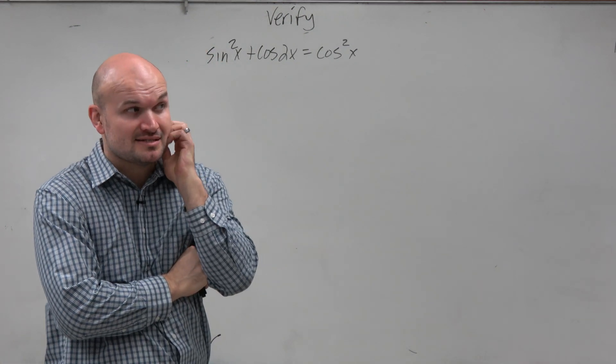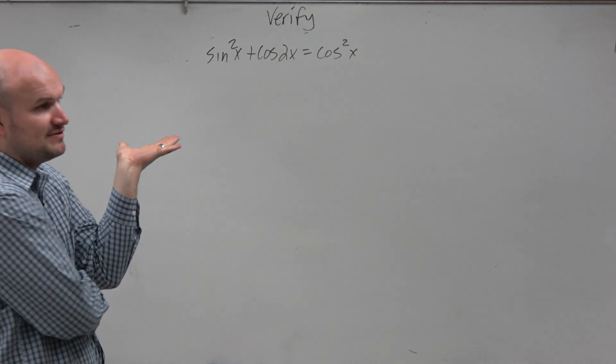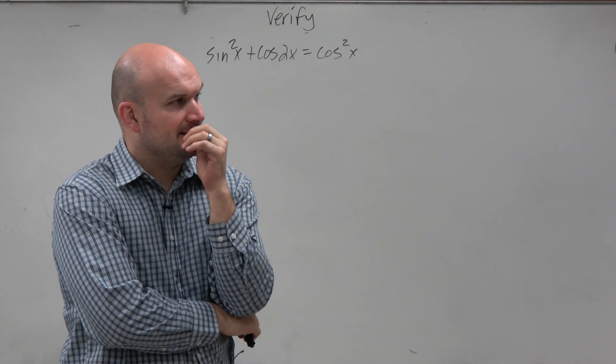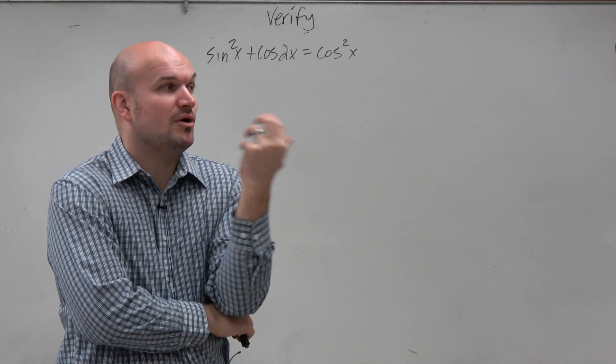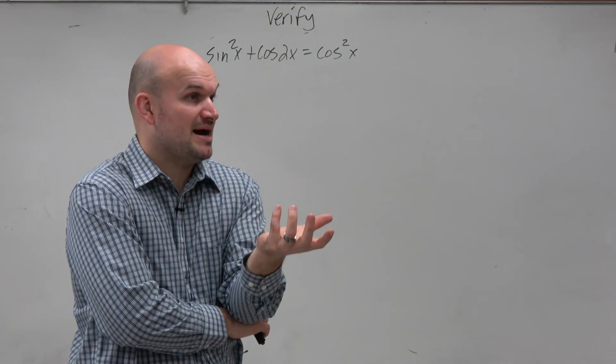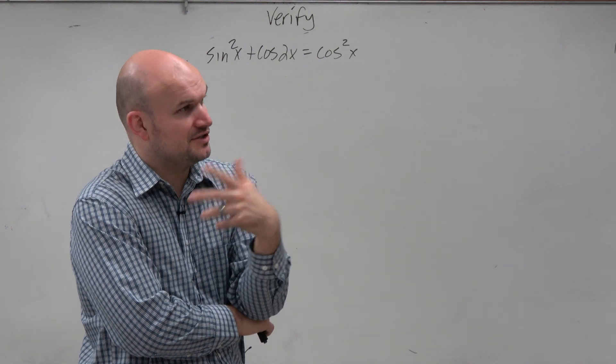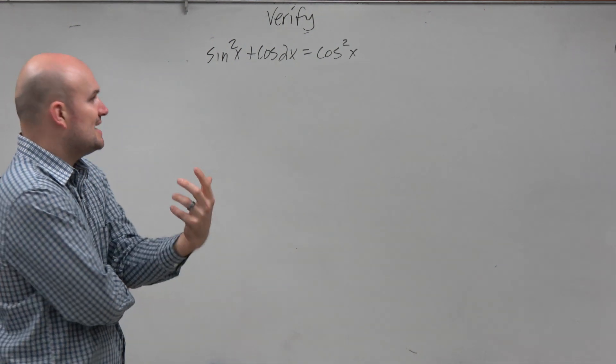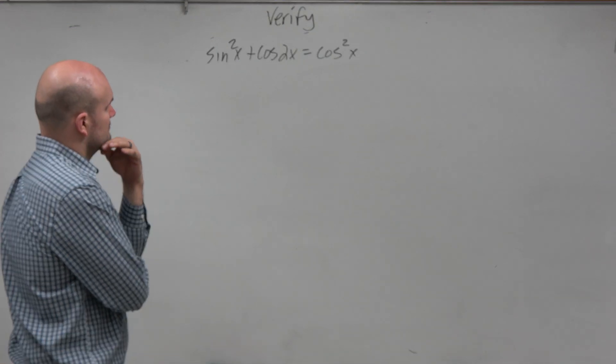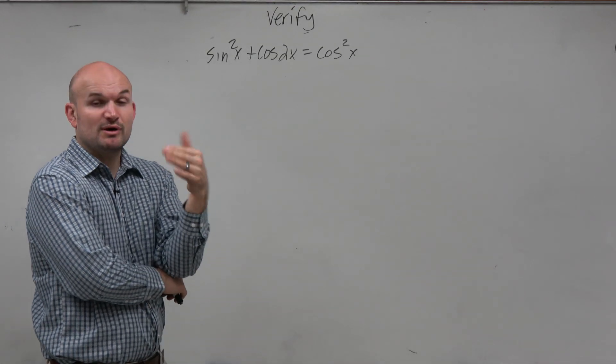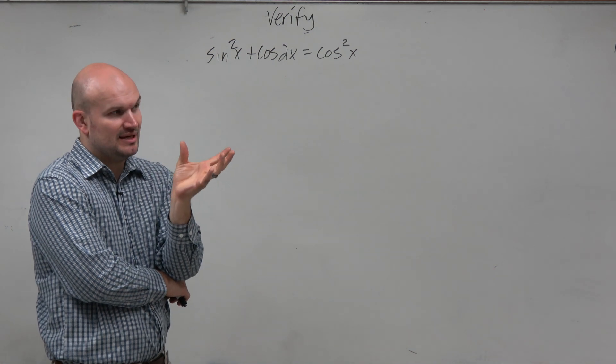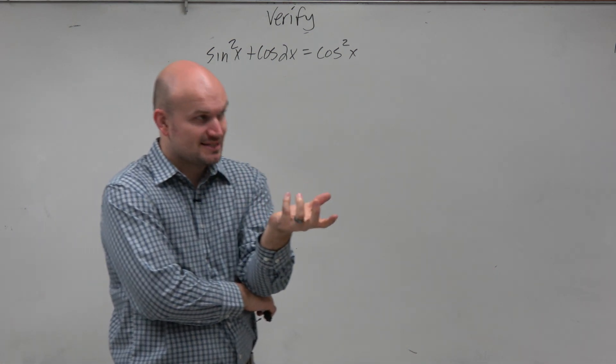Now, the tough thing with this one is we can see we have a cosine of 2x. So which one do we choose? There's multiple different ones you could choose, and it doesn't matter. Some of them are going to be a little bit easier than others. For the sake of this one, I'd usually start with the cosine squared minus sine squared. Typically, that's going to be one that's going to be helpful.